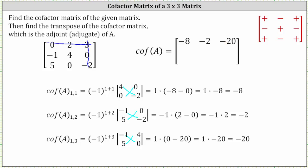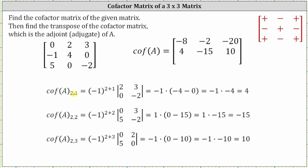Now let's work on row two. Cofactor A sub two comma one is equal to negative one raised to the power of two plus one times the corresponding minor. If we eliminate row two, column one from the original matrix, we can see the minor is the determinant where row one is two, three and row two is zero, negative two. The cube of negative one is negative one. The determinant is negative four minus zero. Simplifying, we have positive four — the entry for row two, column one.